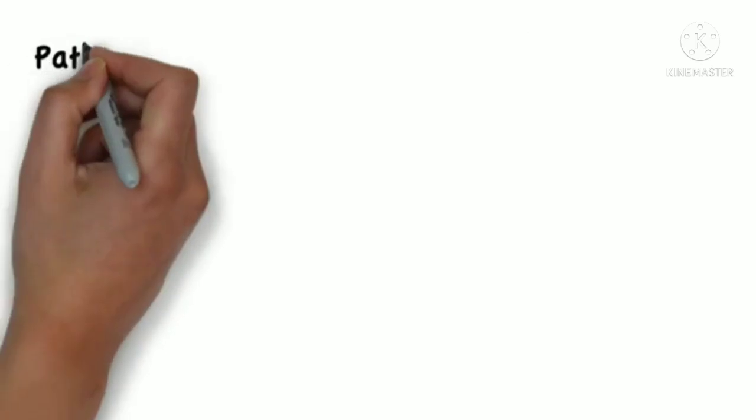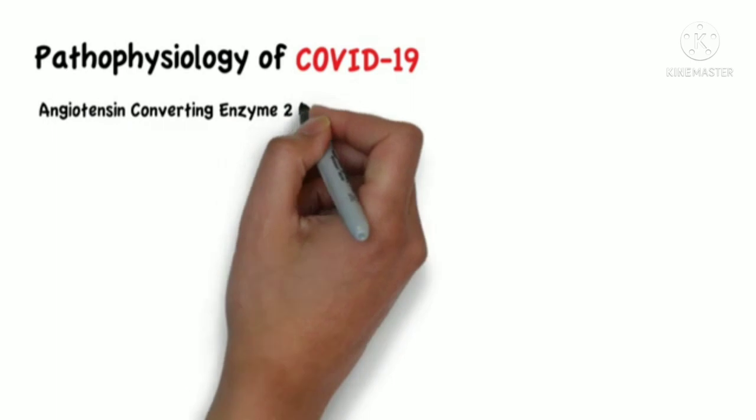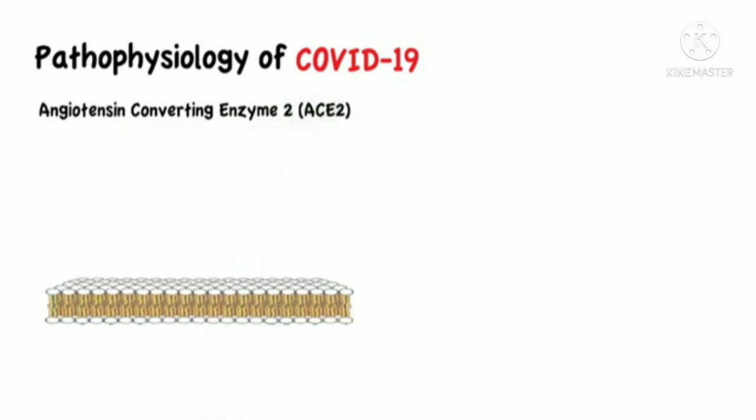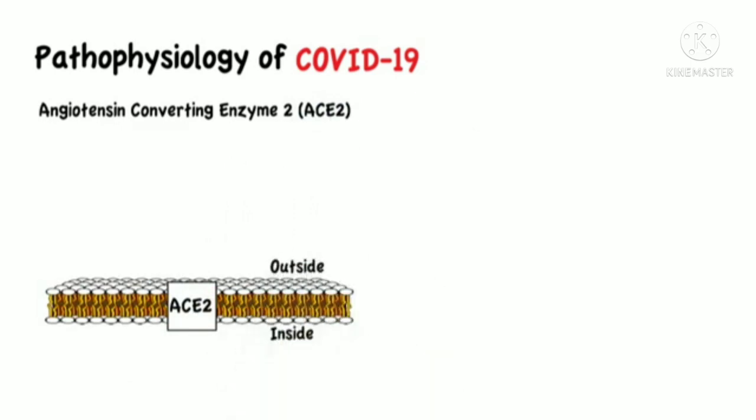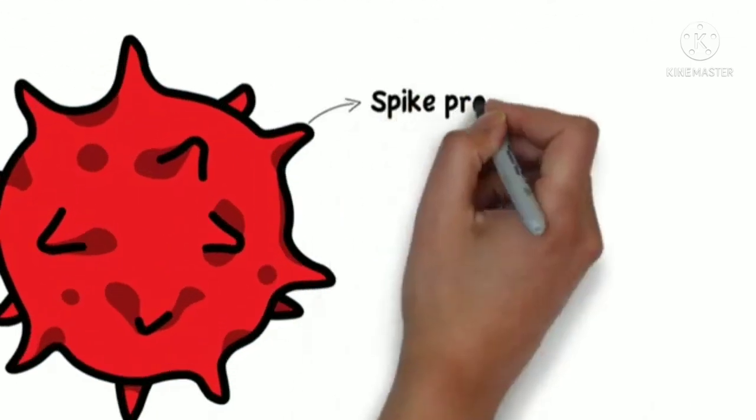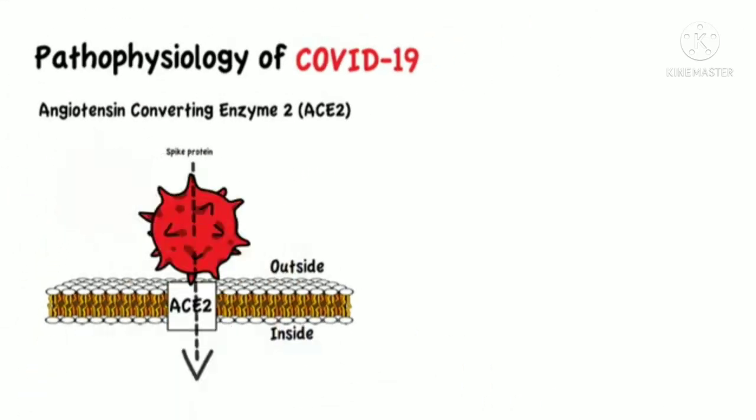As of the pathophysiology of COVID-19, angiotensin-converting enzyme 2 was identified as the receptor that the virus utilizes to infect host cells. The spike proteins present in the virus membrane bind to ACE2, allowing it to enter the host cell through endocytosis.